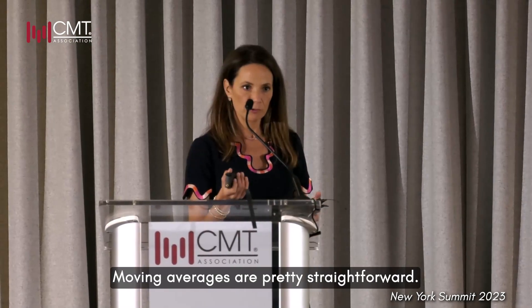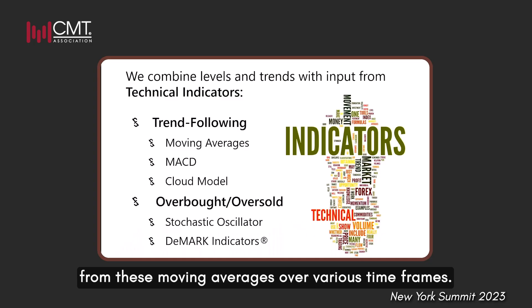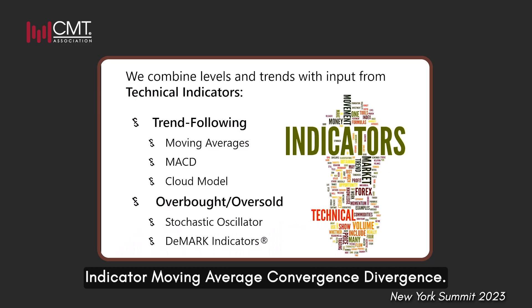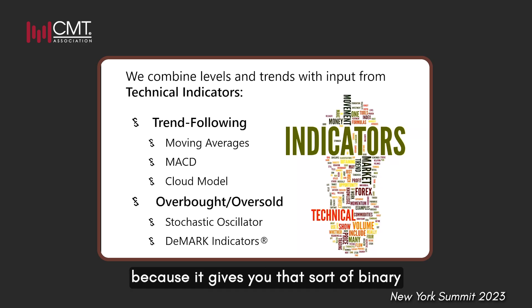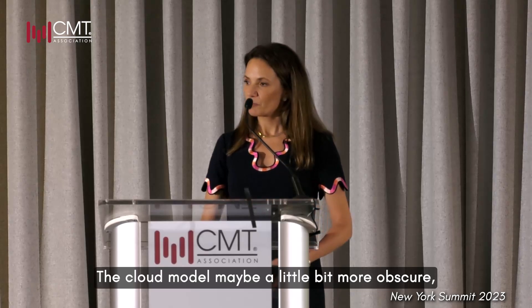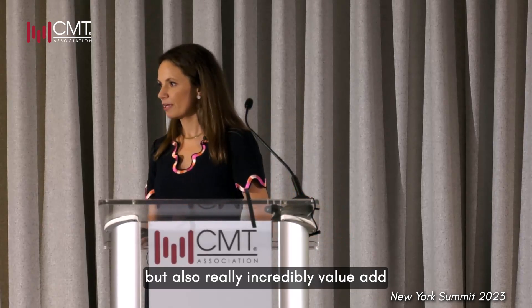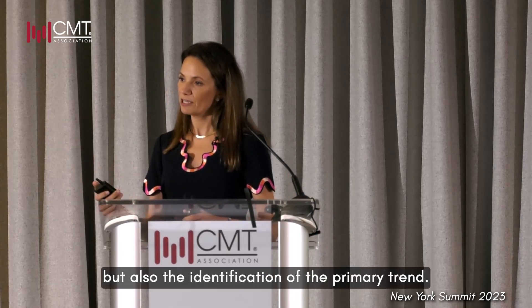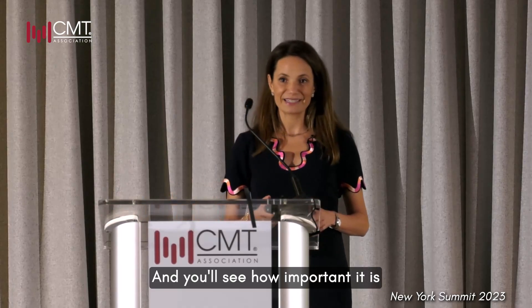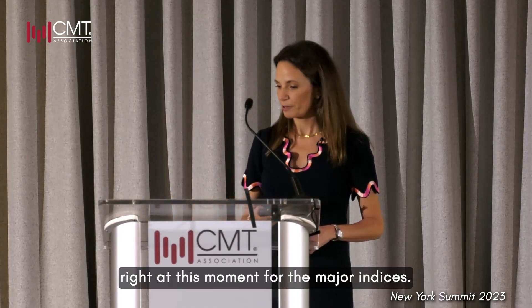Moving averages are pretty straightforward — we want to see a directional bias from these moving averages over various time frames. The MACD indicator — moving average convergence divergence — is to me one of the best gauges of the trend. I love it because it gives you that binary buy/sell takeaway with its crossovers. The cloud model may be a bit more obscure, but it's incredibly value-add in terms of visualizing support and resistance, identifying the primary trend — and you'll see how important it is right at this moment for the major indices.